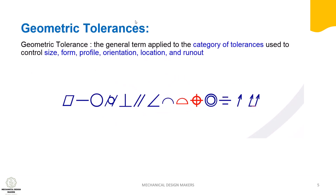Geometrical tolerance is a set of tolerances used to control the geometry of a part — that is form, profile, orientation, location, and runout. We will see the detailed explanation of these symbols in a future video.